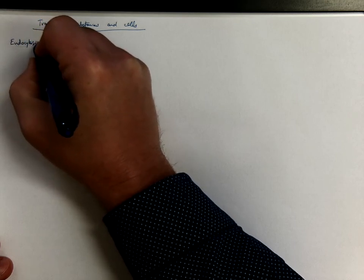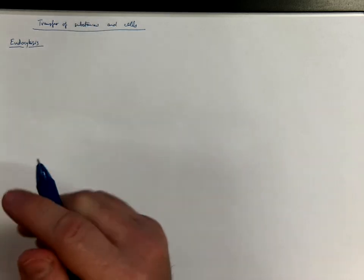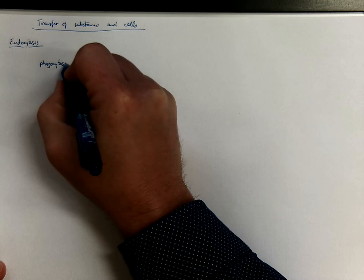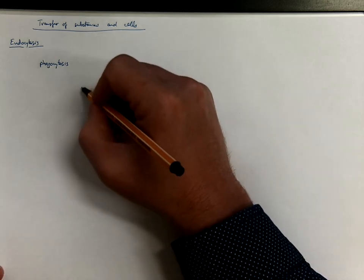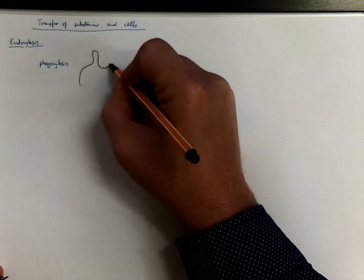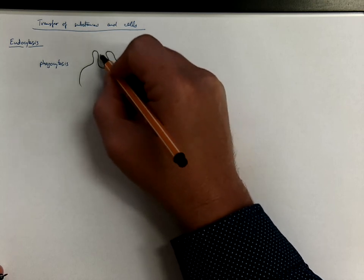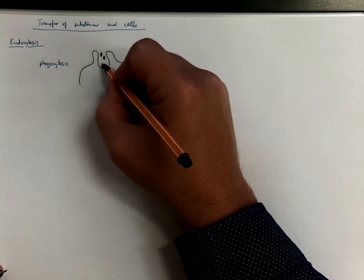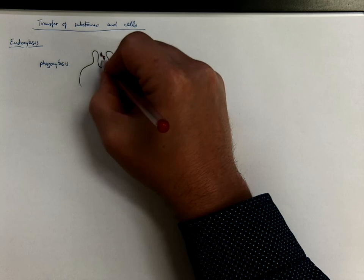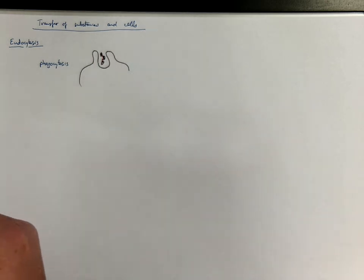First, the endocytosis either occurs as phagocytosis, which is transfer or intake of solid particles. The cells, the phagocytes, are surrounding the particles. Particles could be, for example, bacteria or some dead cells. In bacteria, they are often connected with immunoglobulins to form clusters.